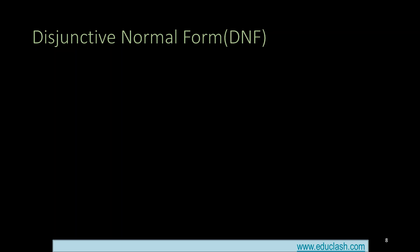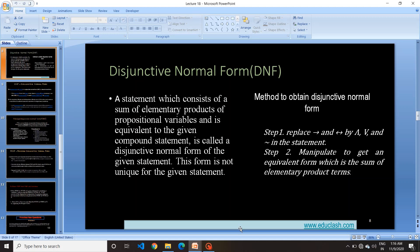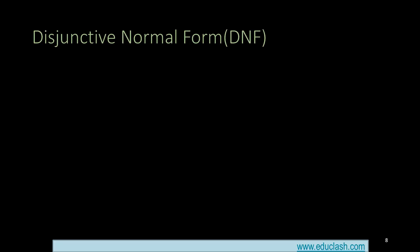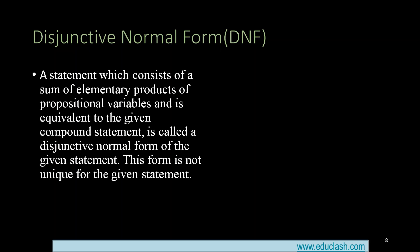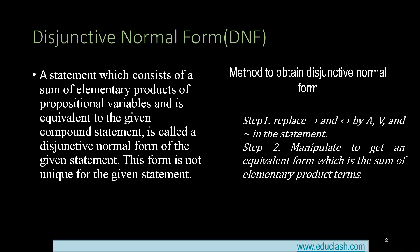Now we can see Disjunctive Normal Form (DNF). A statement which consists of a sum of elementary products of propositional variables and is equivalent to the given compound statement is called a disjunctive normal form of the given statement. Basically, this form is not unique for a given statement. Method to obtain DNF: Step 1 - replace implication by its equivalent, and Step 2 - manipulate to get an equivalent form which is the sum of elementary product terms.